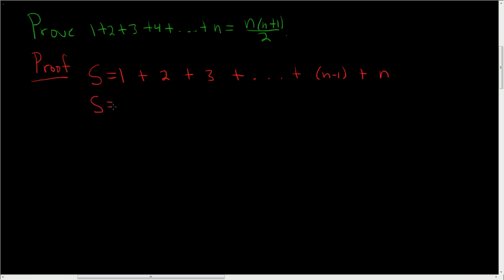Let's be weird and let's write S backwards. It's n plus n minus 1 plus n minus 2 plus dot dot dot plus 2 plus 1. So all we've done is we've written this two different ways.